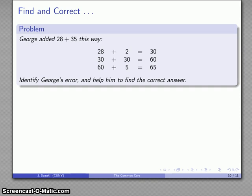And this leads to one of the most reviled problems that show up on the Common Core, which is the finding correct type problems. And they are generally something like this. George added 28 plus 35 this way, and what did George do wrong? And help him to find the correct answer. Well, note that there's two parts to this problem. Identify the error that George made. Fix it.